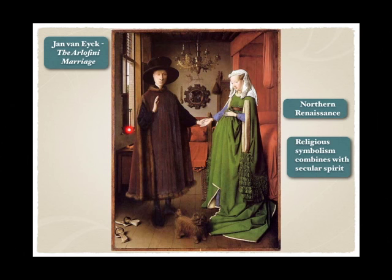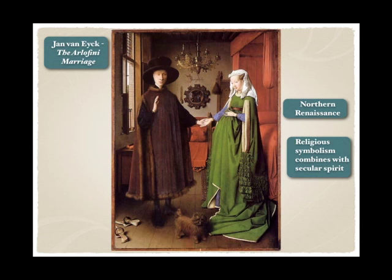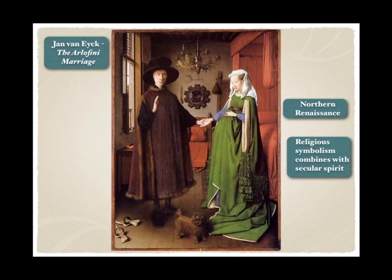Mr. Arnolfini is also wearing a fur, which in both the Renaissance and medieval periods was indicative of wealth. However, he's newly wealthy — not born into it, as we can tell by his hat, because he is a merchant. He's Italian, but this painting was done in the Northern Renaissance; he was a merchant in Flanders. We also see the ties of trade — these shoes are from the Italian peninsula. Here we have a dog, which is indicative of loyalty. Here we have a single lit candle — a call out to St. Lucia to give divine inspiration on the wedding night. And there are oranges, which were eaten before making love to help ensure a child.